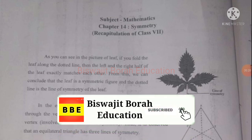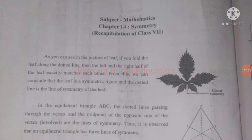As you can see in the picture of a leaf, if you fold the leaf along the dotted line, then the left and the right half of the leaf exactly match each other. From this we can conclude that the leaf is a symmetric figure and the dotted line is the line of symmetry of the leaf. The line of symmetry is that line which divides a geometric figure or object into two equal parts.